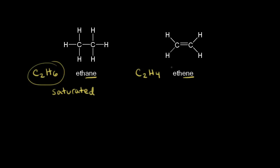If we look at ethene, we only have four hydrogens for two carbons, so we say that ethene is unsaturated. For two carbons, it's possible to have more, so this is unsaturated.